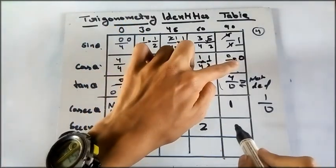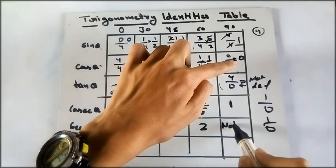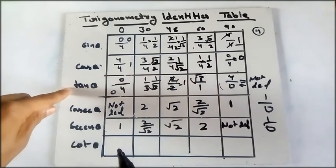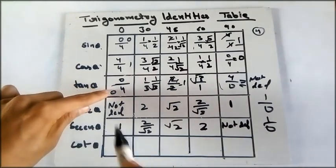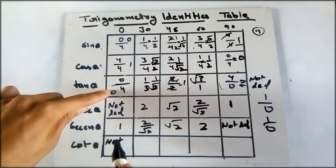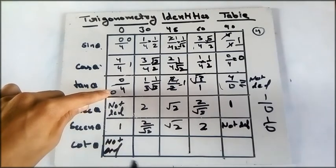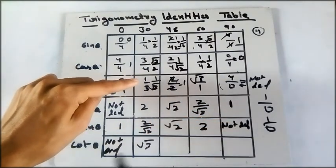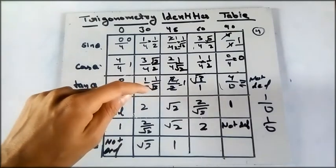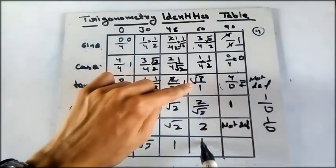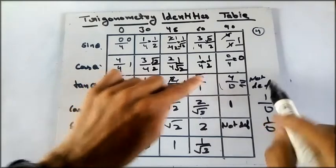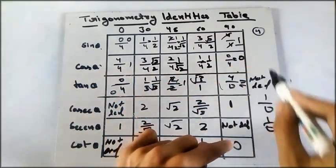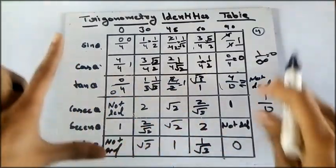Now cot theta is the reciprocal of tan theta. So tan theta, it has 0 in here, so it must be not defined in here. Now next thing is here it is 1 upon root 3, so it is root 3 in here. Now here 1 upon 1, so it is 1. Here it is root 3, so here it will be 1 upon root 3. Here it is not defined, but here it will become 0 because 1 upon infinity is 0. So this is how we made the table.